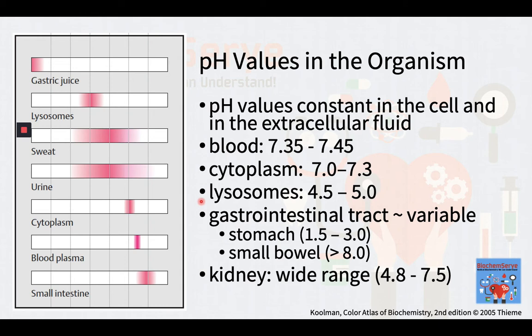In lysosomes, however, the hydrogen ion concentration is several hundred times higher than in the cytoplasm. This is to enable the activation of the acid hydrolases within the organelle. In the lumen of the gastrointestinal tract, which forms part of the outside world relative to the organism, and in the body's excretion products, the pH values are more variable. Extreme values are found in the stomach of approximately pH 2 and in the small bowel a little over pH of 8. Since the kidney can excrete either acids or bases depending on the state of the metabolism, the pH of the urine has a particularly wide range of variation from 4.8 to 7.5.